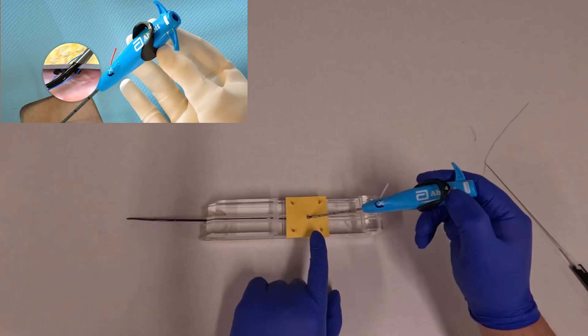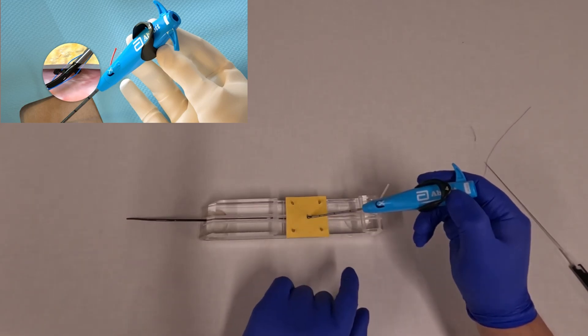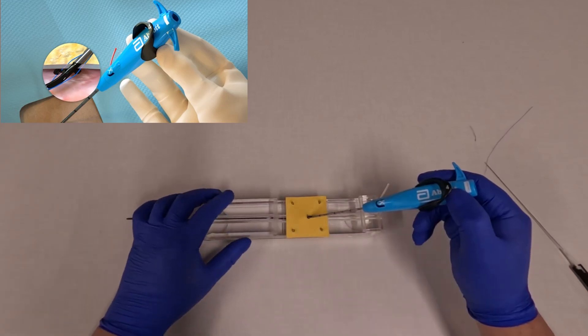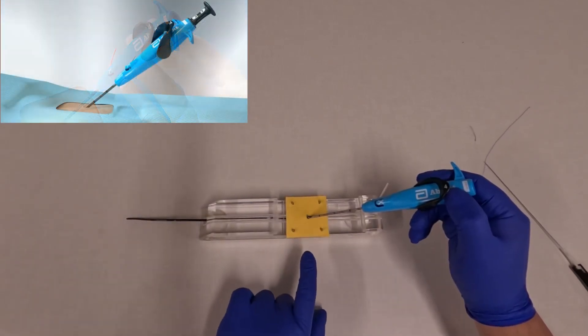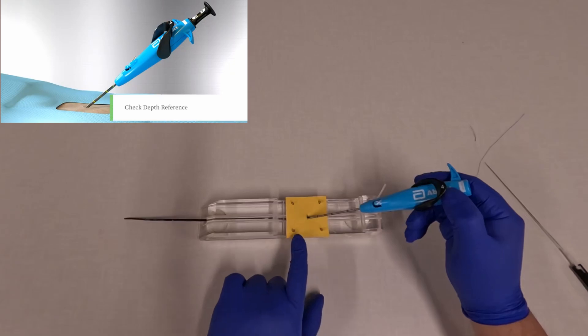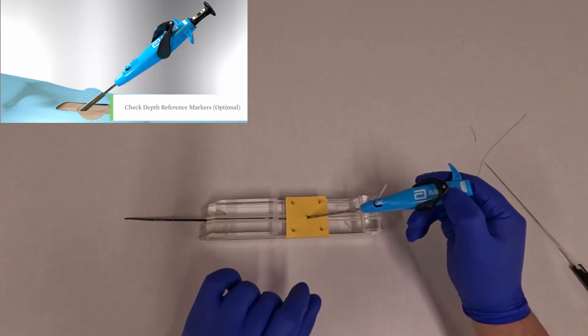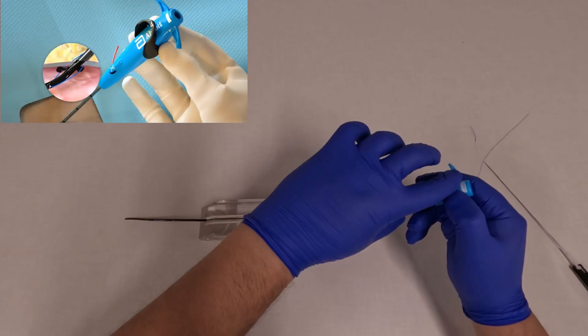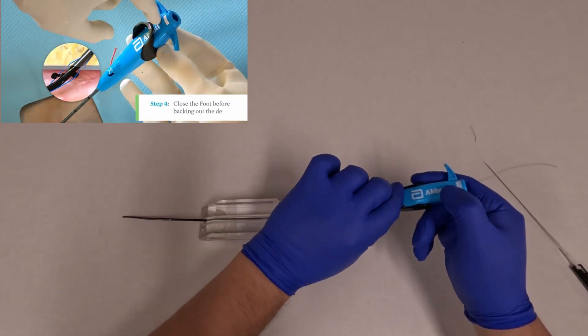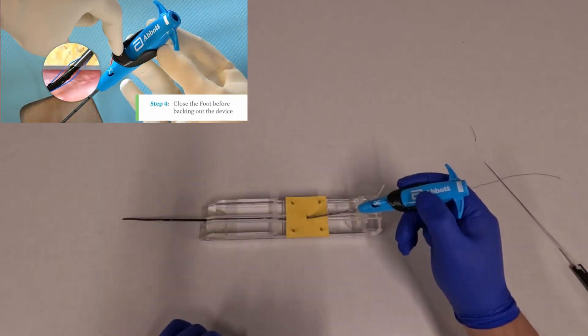At this point, the suture has been deployed. We're going to advance very slightly with the whole device to bring this footplate away from the arteriotomy wall. Now we're ready to collapse the footplate. We deploy step four and the footplate is now collapsed.